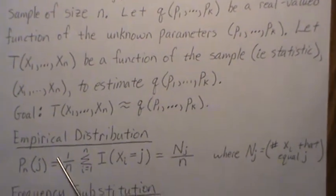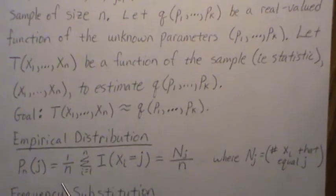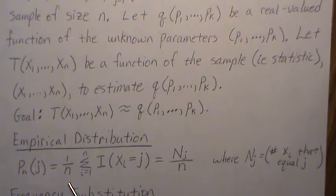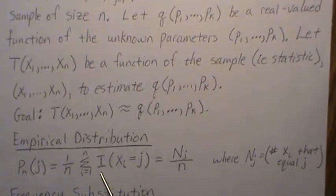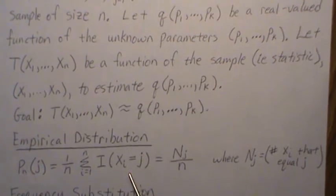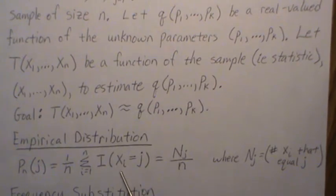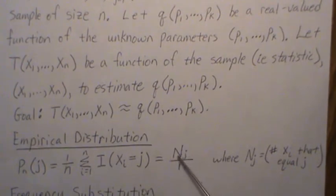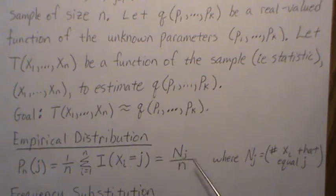Let me introduce the empirical distribution. P sub n of j is equal to 1 over n times a sum of an indicator function, which goes through each sample and checks to see if it equals j — i.e., did we draw from the jth category — and adds them up. We can generically call this n sub j, where n sub j is the number in our sample that equaled j.